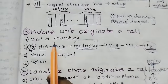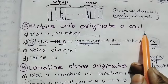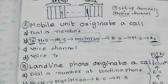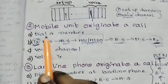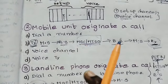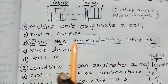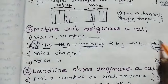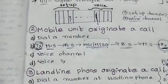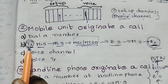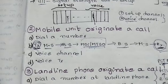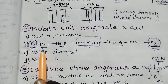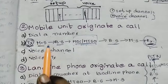Next, the second point is mobile unit originating a call. So we are going to call and originate. First, we are going to do mobile unit initialization, then proceed to originate the call.